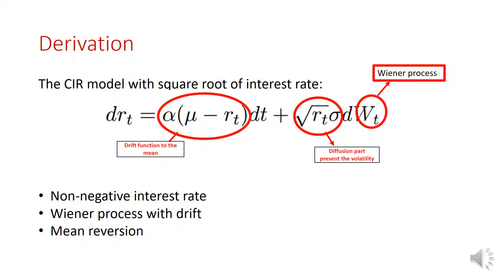The last part is the Wiener process W at time t. I want to explain the three important properties of the CIR model, which are non-negative interest rates and mean reversion.